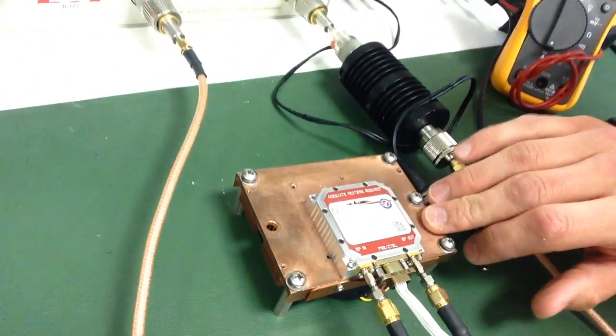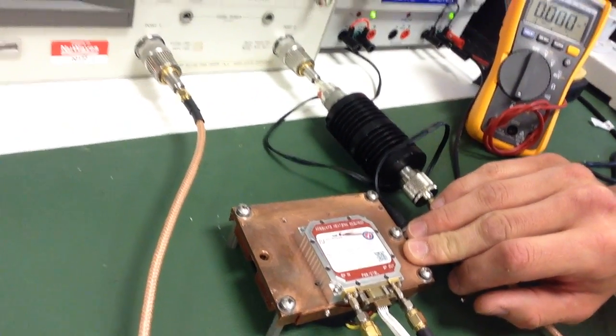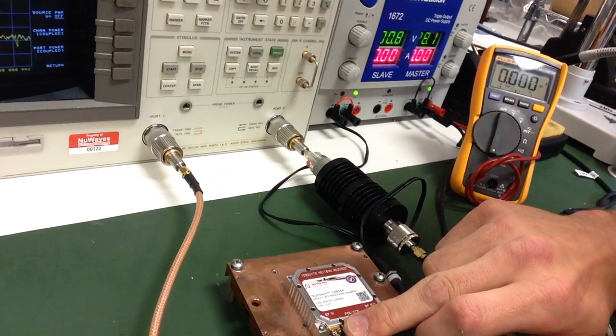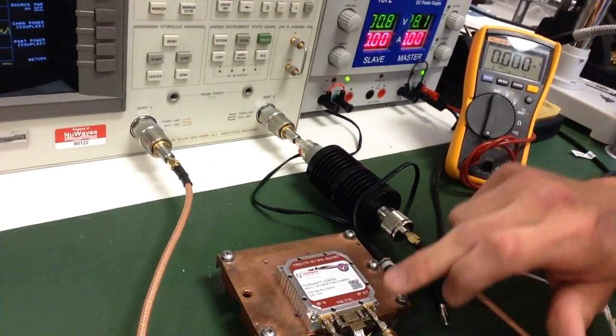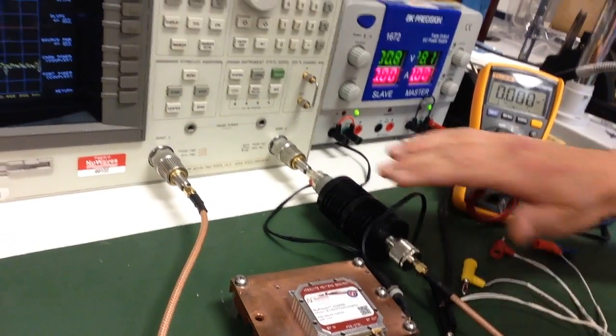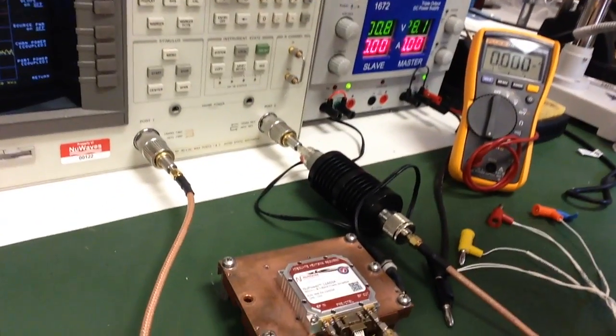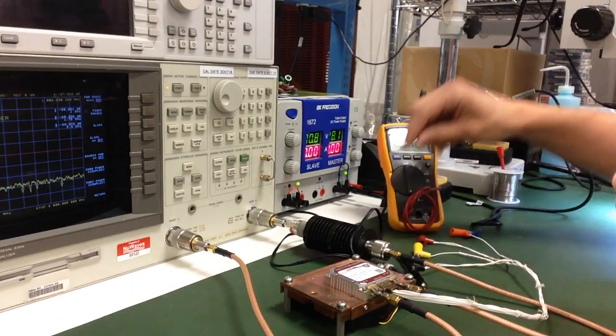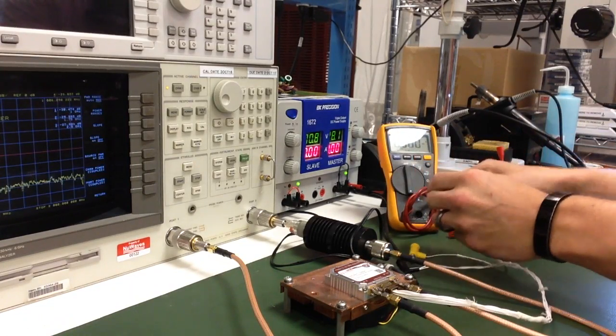As you can see, it's not adhered to the heat sink, which is very important. I have my input coming from the network analyzer into RF IN. I'm driving it with zero dBm input. I have my output going to the attenuator into the network analyzer, and my power connector here. My power cable is grounded and I'm applying 28 volts.